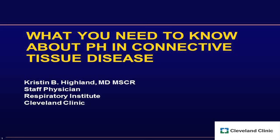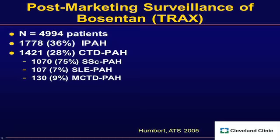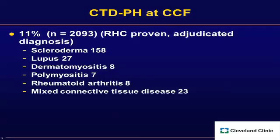We're going to talk about pulmonary hypertension in the setting of connective tissue disease. Most of the data pertains particularly to scleroderma. This is post-marketing surveillance in Europe right after Bosentan was launched — about the first 5,000 patients. You can see that 36% had idiopathic pulmonary arterial hypertension, nearly a third had connective tissue disease-related PAH, and of those, 75% were scleroderma patients, with a smattering of lupus and mixed connective tissue disease.